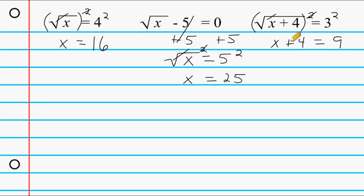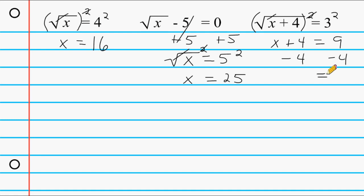Now we can take this plus 4, which is not underneath the radical symbol anymore, and move it over to the right hand side of our equation, leaving x all alone on the left. So we have to subtract 4 from both sides of our equation. These opposite integers cancel out leaving us with just x on the left, and on the right 9 take away 4 is equal to 5.